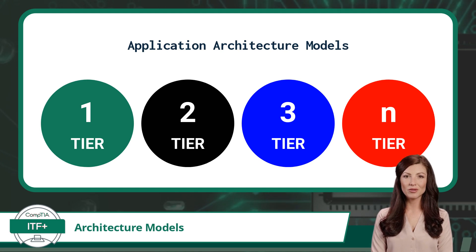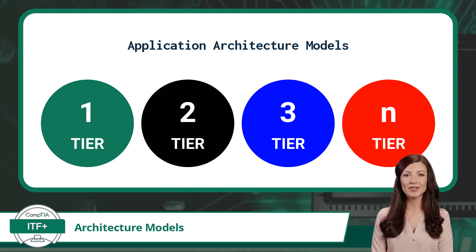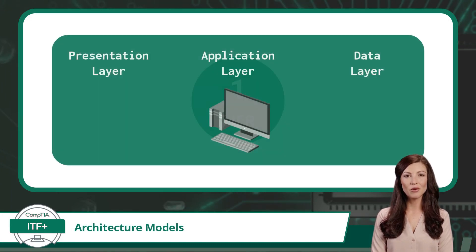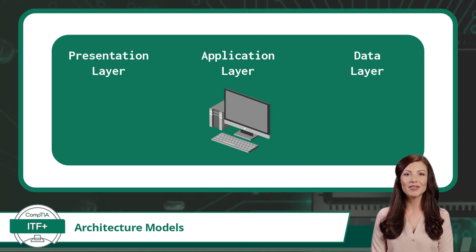Let's start with the simplest model, the one-tier architecture, and see how the application architecture layers are organized. In a one-tier architecture, also known as a monolithic architecture, all the components of an application reside on a single machine or system. There is no separation of the presentation layer, application layer, and data layer — they are all tightly integrated into one unit.